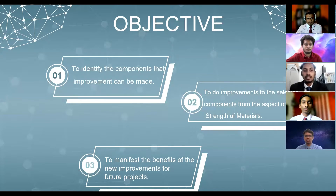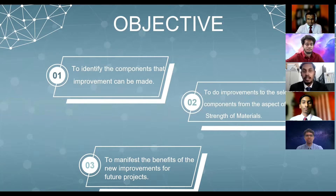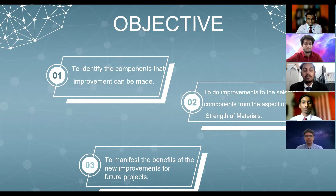These are some of the objectives of the MRT3 project. First is to identify the components that improvement can be made. Second is to do improvements to the selected components from the aspect of strength of materials. Third is to manifest the benefits of the new improvements for future projects. Now our group members will present their improvements of the project.